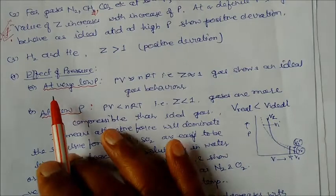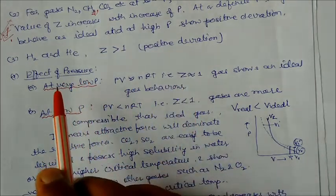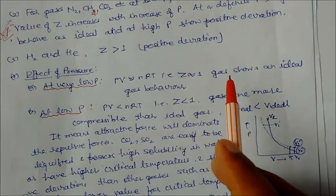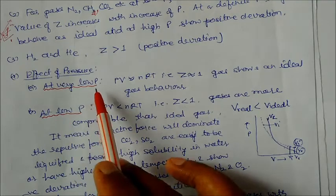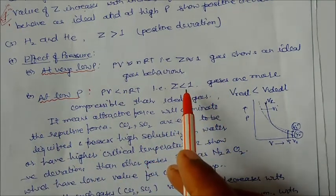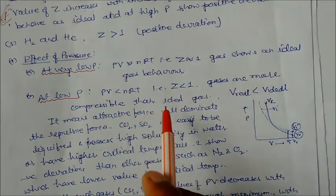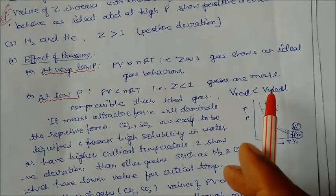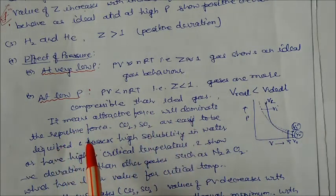Regarding the effect of pressure: at very low pressure, PV equals nRT and Z is approximately equal to 1, so gases show nearly ideal behavior. At low pressure — but not extremely low — Z becomes less than 1, meaning the gas is more compressible than ideal gases. In this case, the volume of the real gas is less than the volume of the ideal gas, meaning attractive forces dominate over repulsive forces.